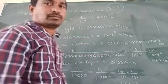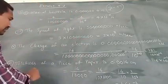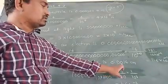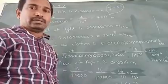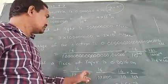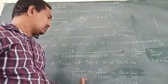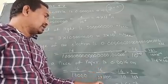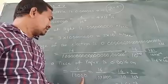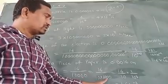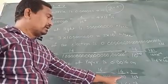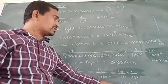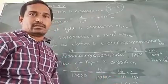Next, thickness of a piece of paper is 0.0016 centimeters. That is 16 by 10,000. It is a 2-digit number, so convert it into a 1-digit number by dividing by 10. That means 10,000 becomes 10 into 1,000. 16 by 10 into 1 by 10 cube. 16 by 10 is 1.6 into 10 to the power of minus 3.